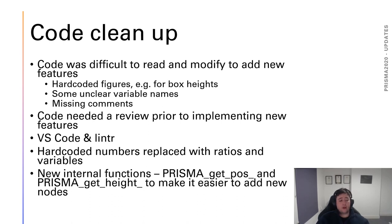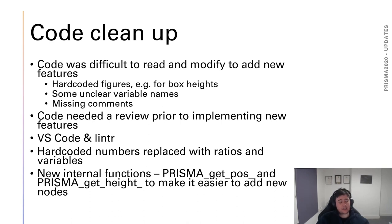The code also had hard-coded figures for box heights and positions, variable names that weren't always clear, and lacked comments in places. The code was functional but didn't really allow for extensibility or building in new features. A code review took place using Visual Studio Code and a package called lintr to analyze the source files and make them more readable and consistent. Within that review, hard-coded numbers were replaced with ratios and variables so boxes are positioned relative to each other — that's the prisma_get_pos function. We can also programmatically alter the height of a box depending on the number of lines of text, making it easier to add new nodes to the package if, for example, an updated set of guidelines required reporting of additional information.